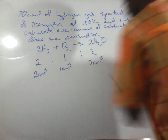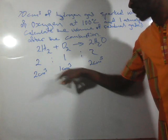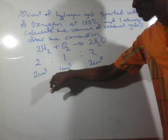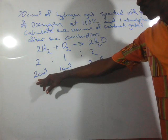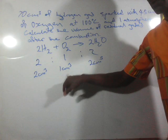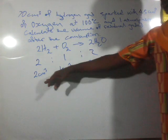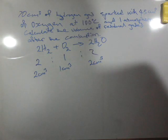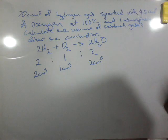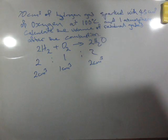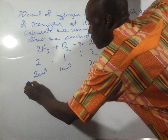The volumes will be 2 cm³, 1 cm³, and 2 cm³. The simple ratio of these two and that of the products - they will combine in the simple ratio of 2 cm³ to 1 cm³ to give us the product. In this case now we have 70 cm³ of hydrogen. From the stoichiometric ratio, 2 cm³ of hydrogen will react with 1 cm³ of oxygen.